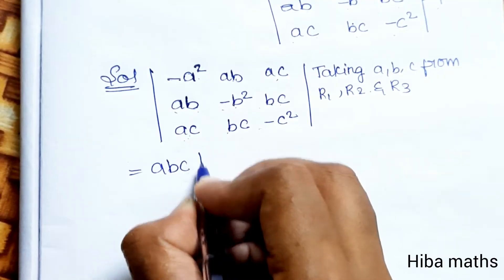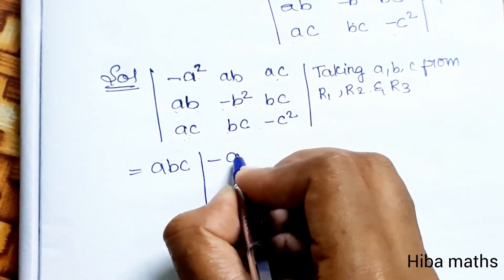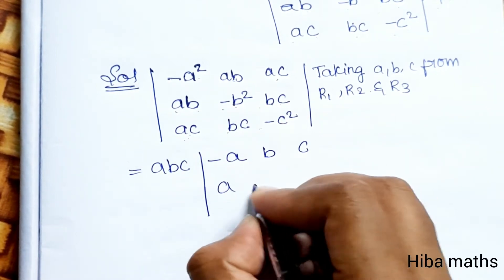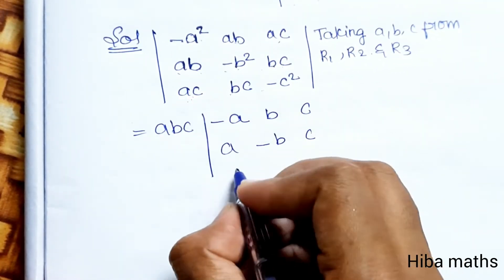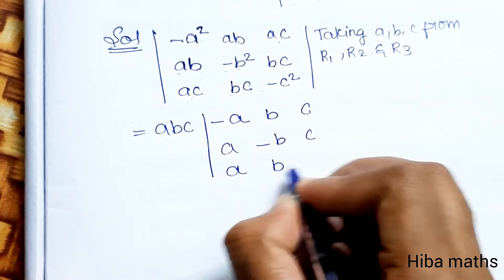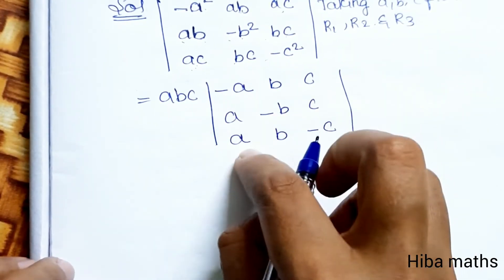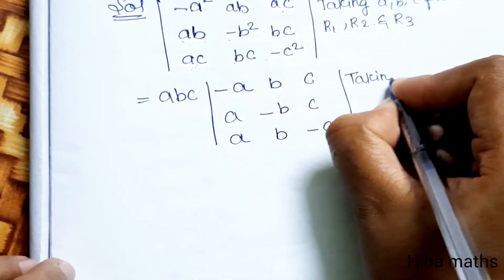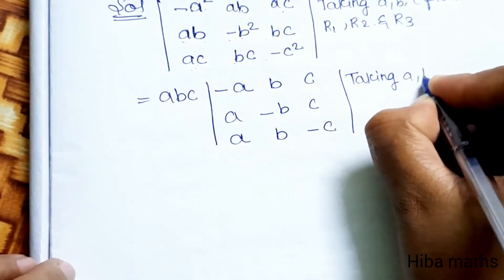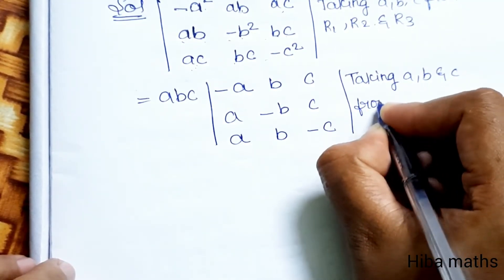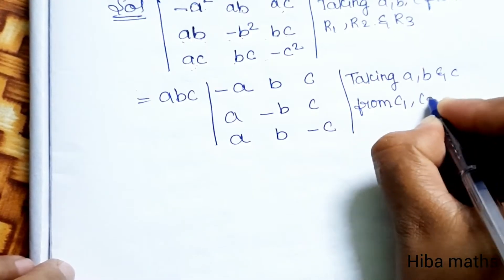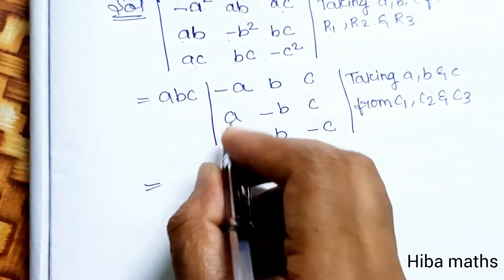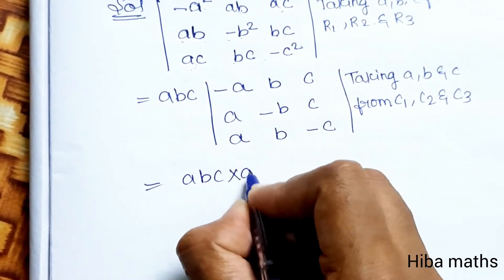So abc comes out once. The remaining determinant has entries: minus a, b, c in row 1; a, minus b, c in row 2; a, b, minus c in row 3. So we already have one abc factor, making it abc times abc, which is a-squared b-squared c-squared.